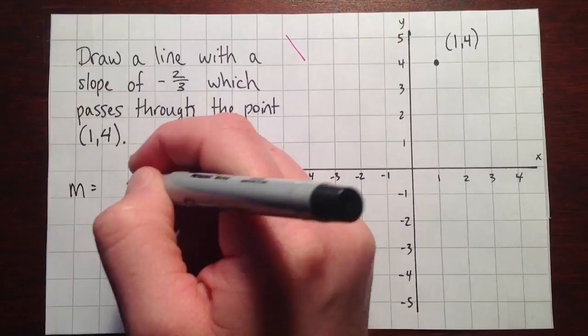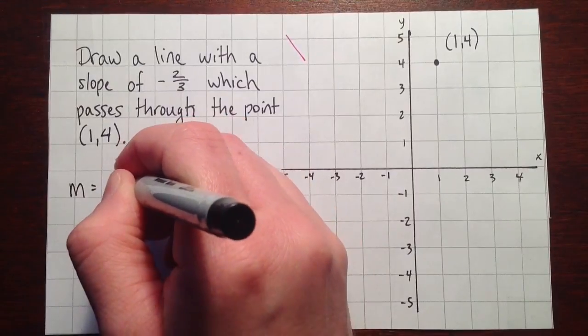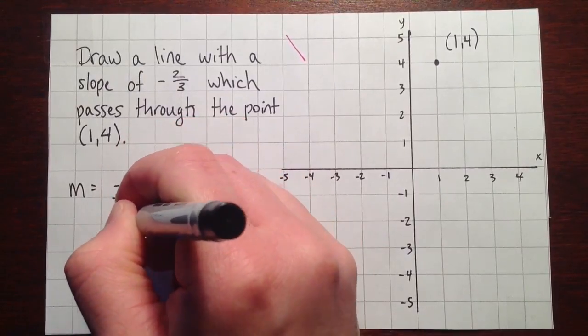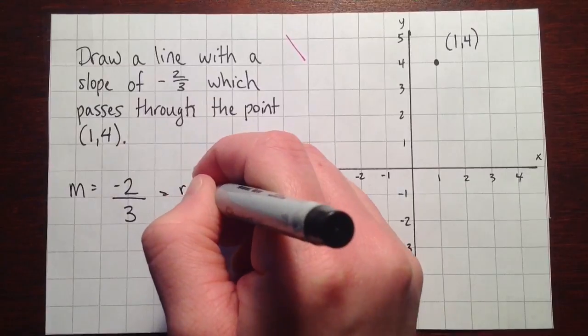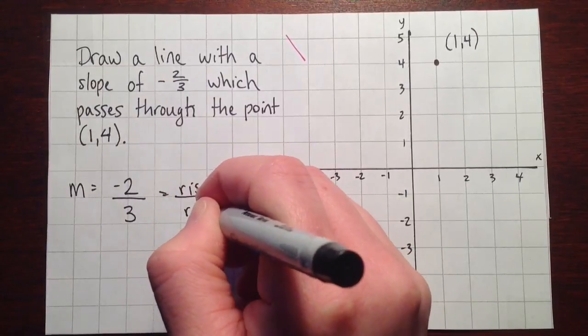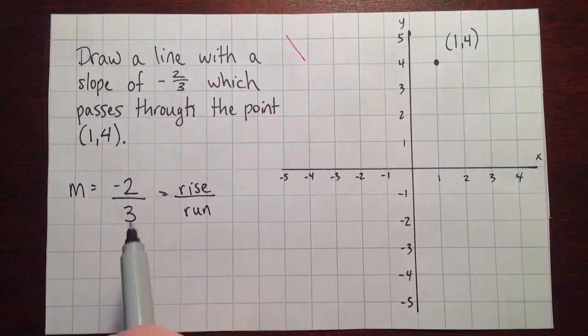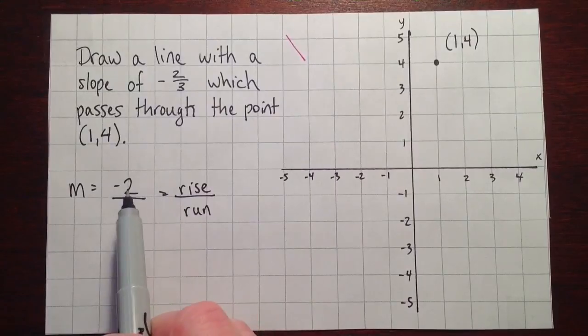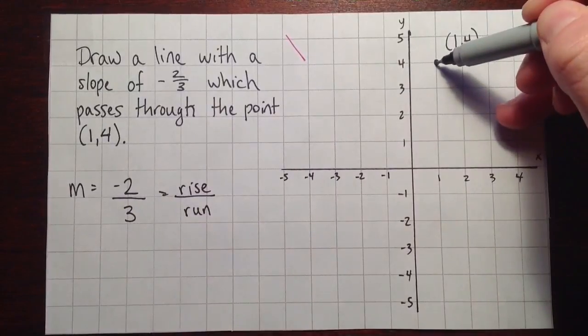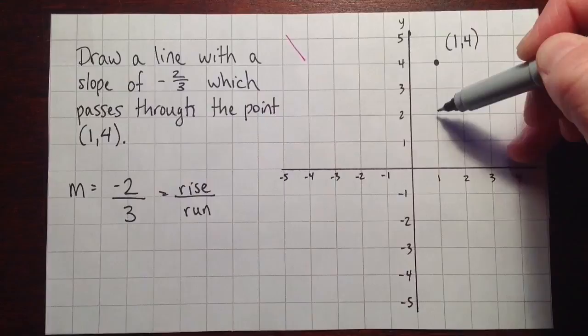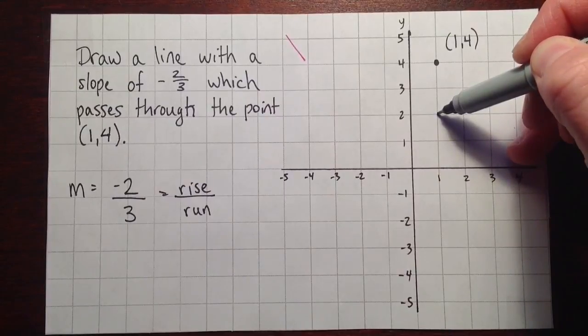Now, our slope is negative 2 thirds. So, our rise is negative 2. So that means starting from our given point, we'll go down 2, and then we'll do a run of 3.